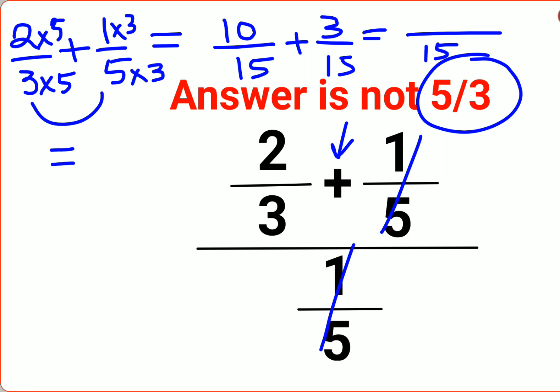So now, since the denominator is the same, we have just 15 in the denominator and 10 plus 3 is 13. So we are left with 13 upon 15 divided by 1 upon 5.